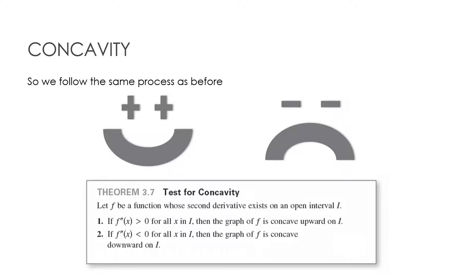So the process that we're going to go through here is similar to the process that we went through to find critical values. The only difference is instead of finding the first derivative, I'm going to find the second derivative because that will tell me the behavior of the graph of the first derivative. So what I need to do is find the second derivative of my function.